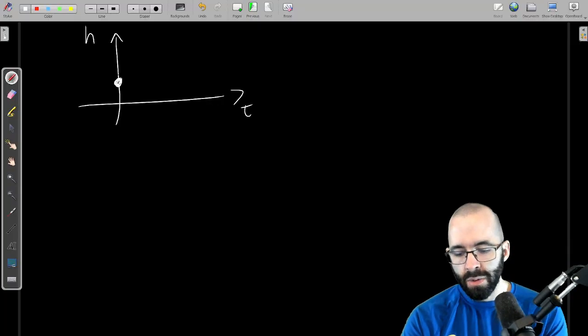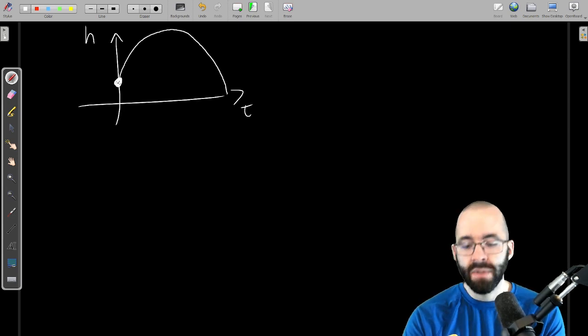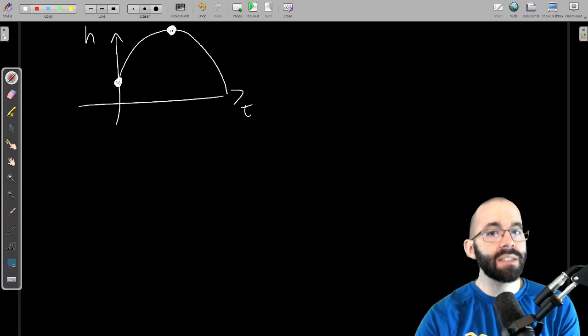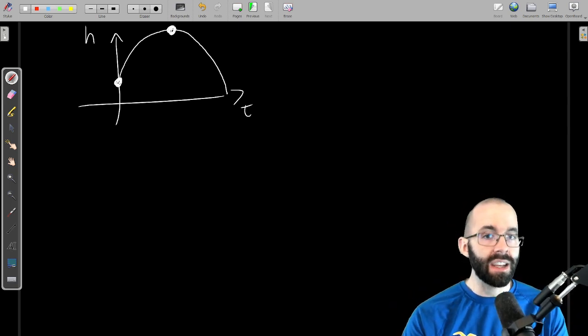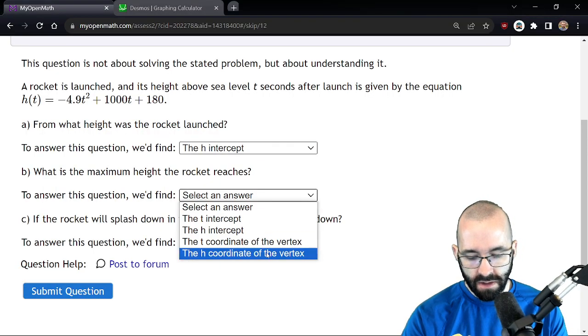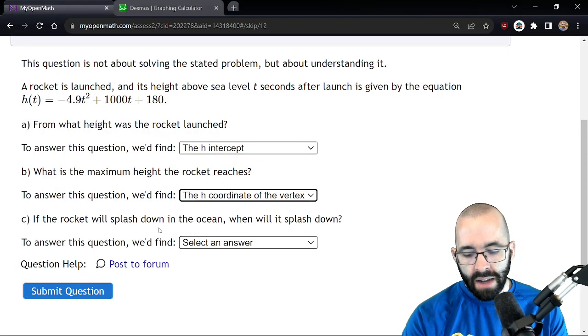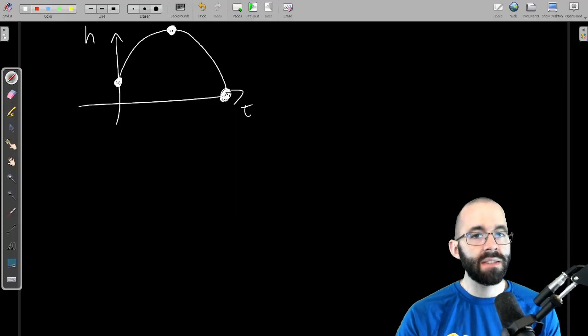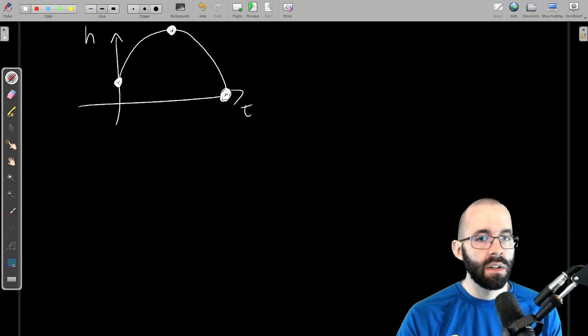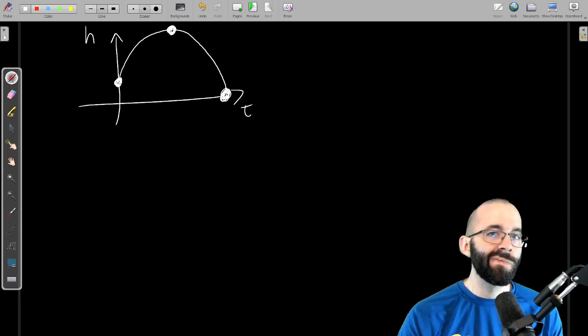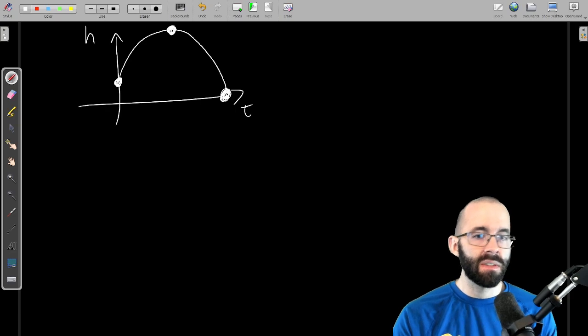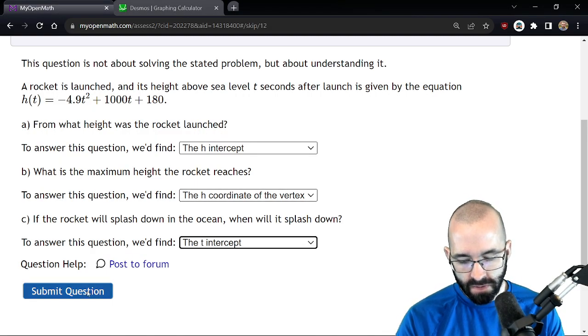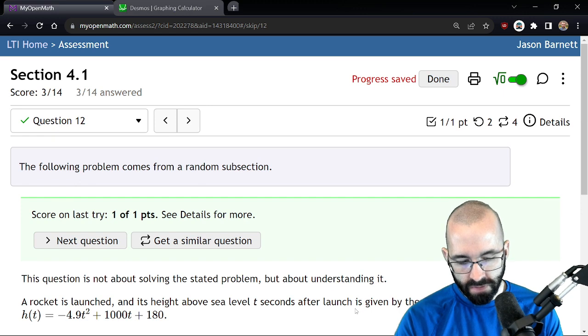What is the maximum height the rocket reaches? Well the height increases over time and then starts decreasing over time. The maximum height is going to be at the vertex. The maximum height is specifically the h coordinate, the output of the vertex. If it comes down to the ocean, when is it going to splash down? That's going to be when the height is zero. So when is the height zero? That's our horizontal intercept, our t intercept. There we go, just like so.